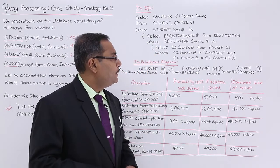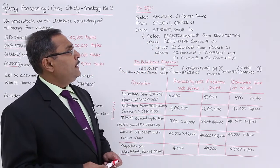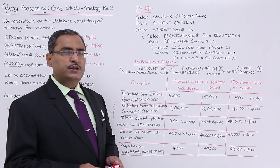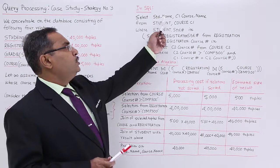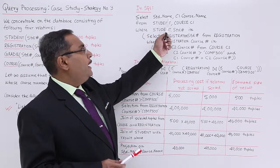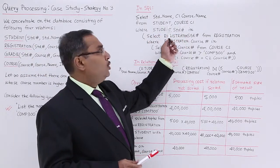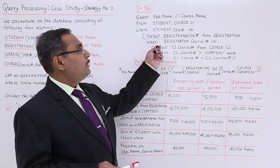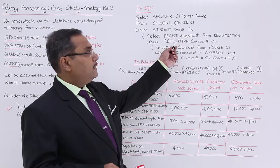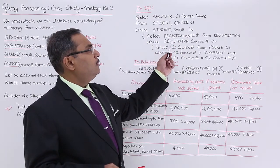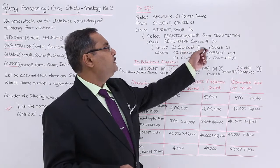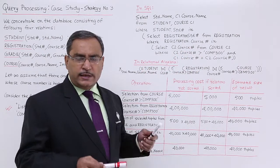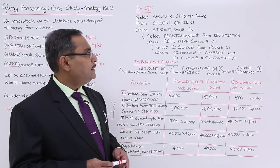Here is the query. Select student name, c1.course name from student, course c1 — because ultimately student name will come from the student and the course name will come from the course. We are doing the conditional product between these two, where student dot student number in select registration dot student number from registration, where registration dot course number in. It is a nested query with many sub queries.